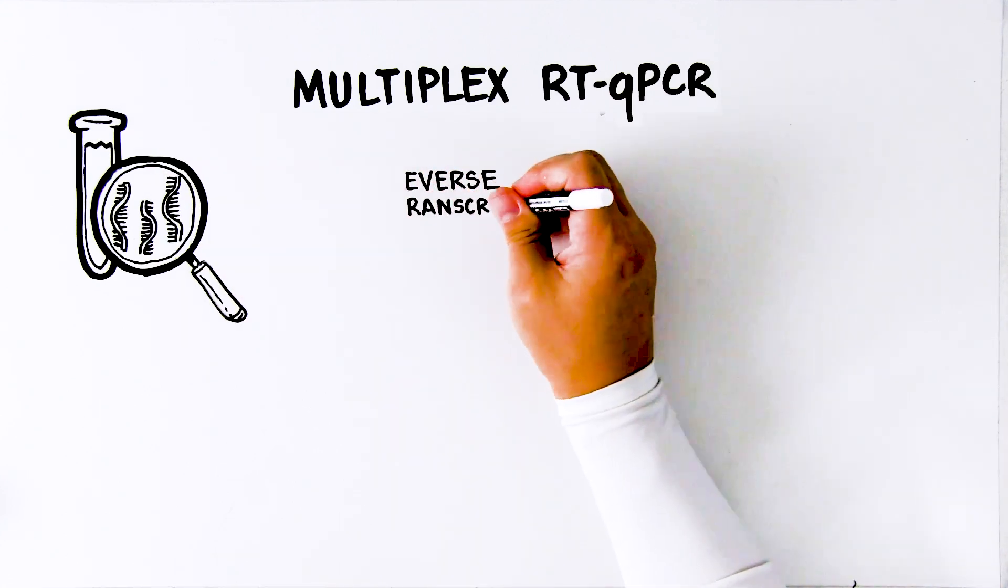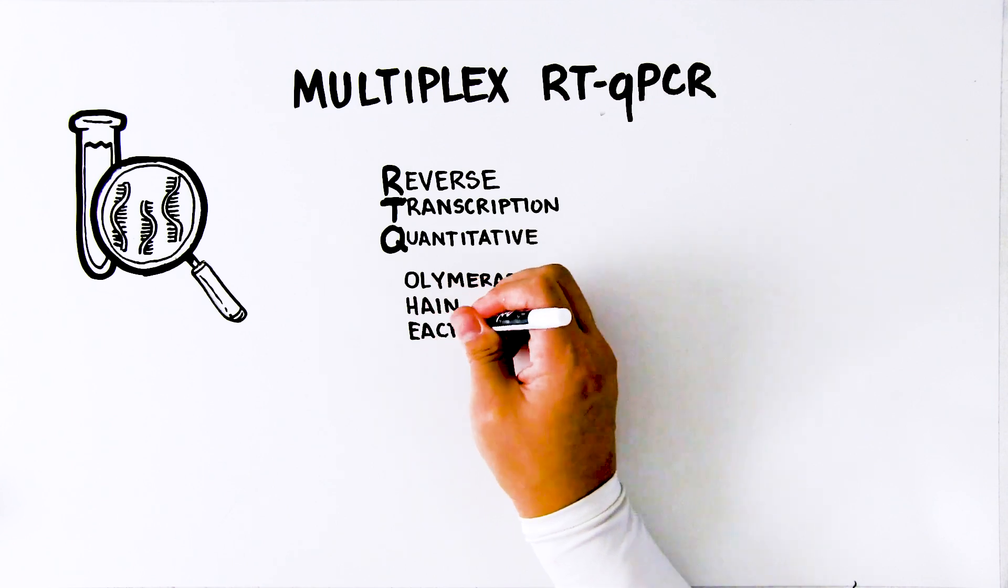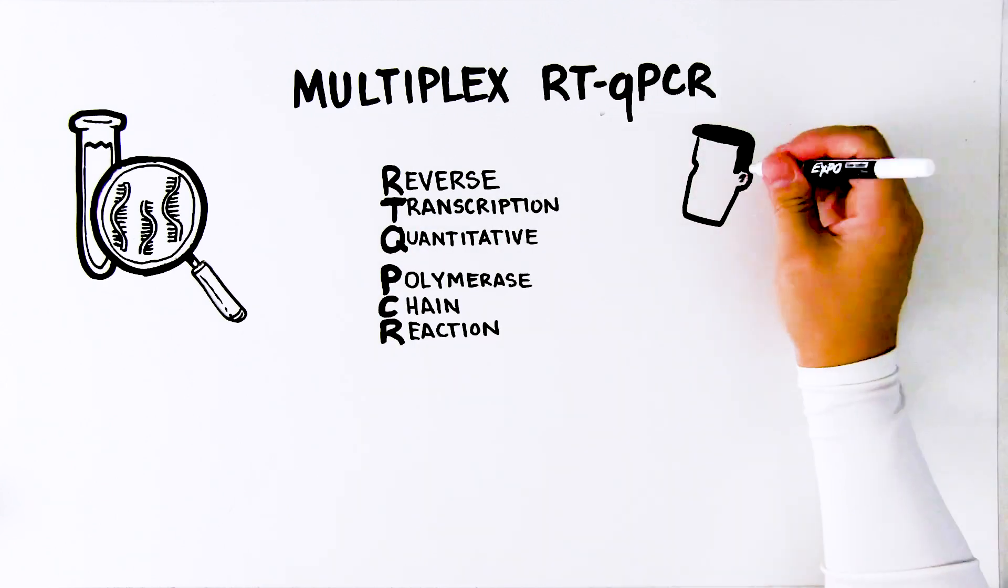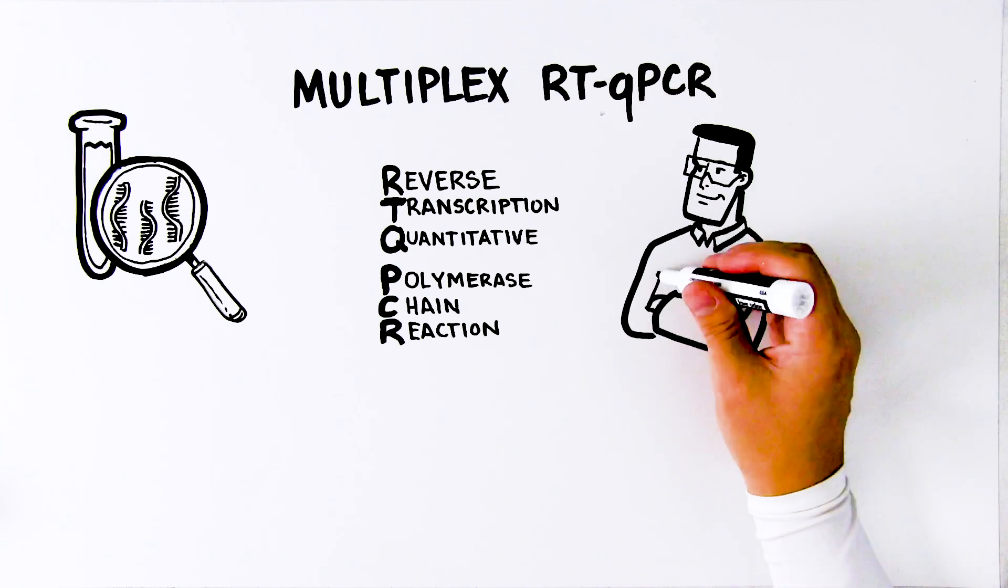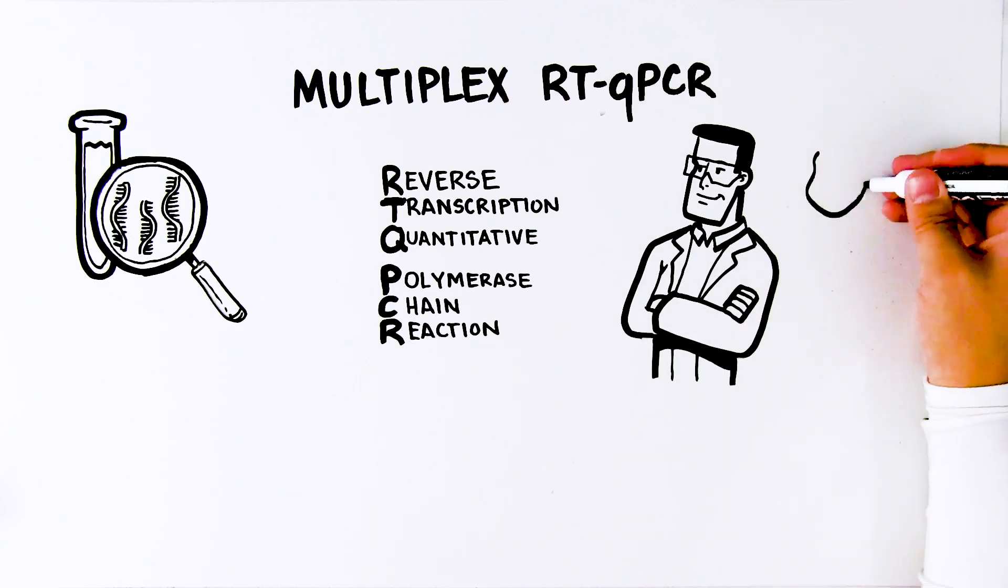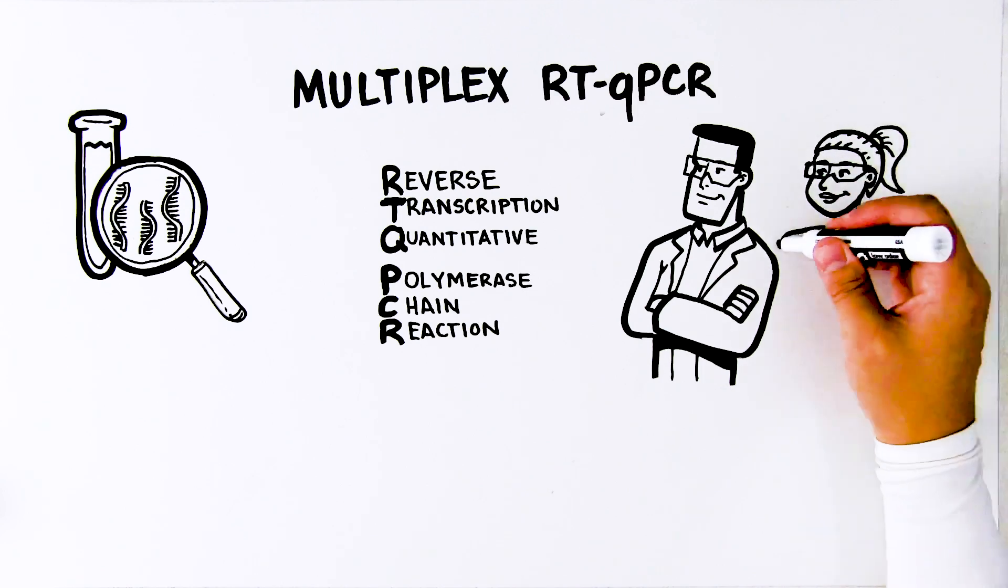This method combines reverse transcription, RT, with quantitative polymerase chain reaction, QPCR, to analyze the expression of several genes at once. It's a highly efficient method that allows researchers to gather more data per sample while reducing cost and increasing throughput.